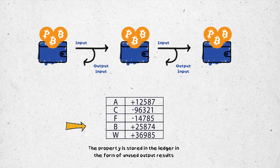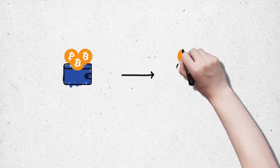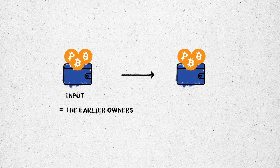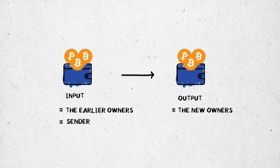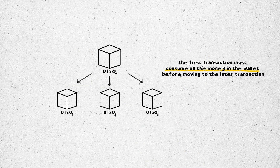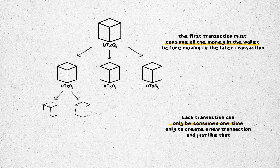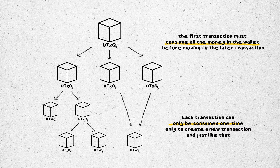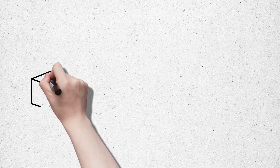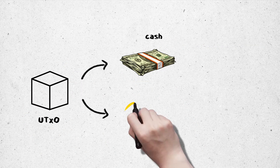The property is stored in the ledger in the form of unused output results. We can see that the input is the earlier owners of the money and the money they are sending. The output is the new owners of the money and the money they are receiving. Each transaction can only be consumed one time to create a new transaction, and just like that, this will create a circulation repeating again and again.